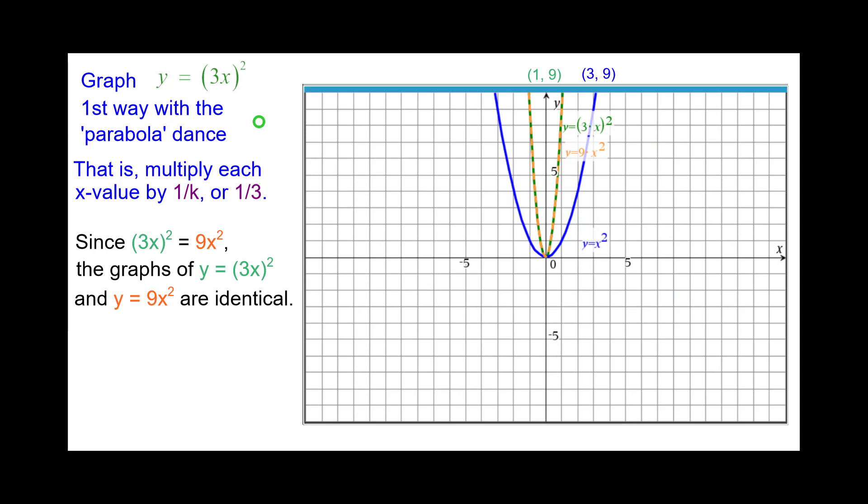Also since the quantity 3x squared is equal to 9x squared, the graphs of y equals the quantity 3x squared and y equals 9x squared are identical.